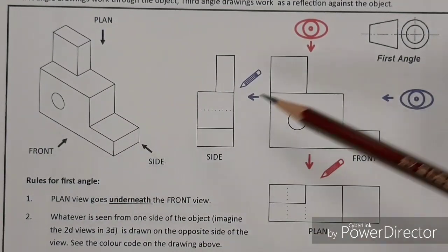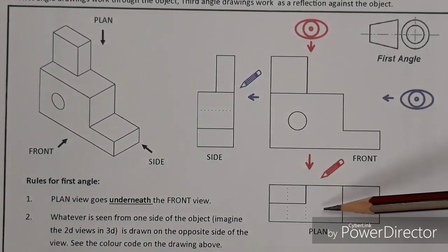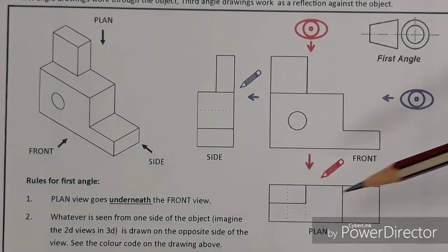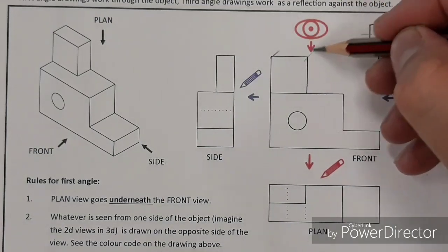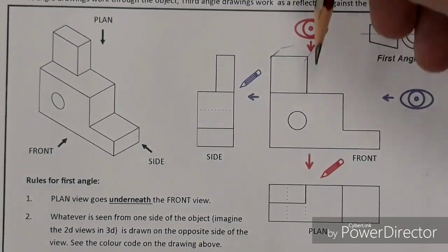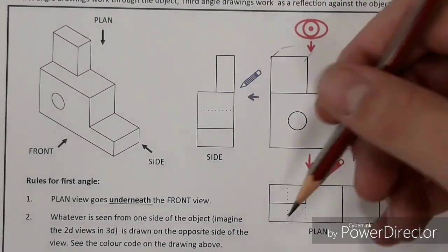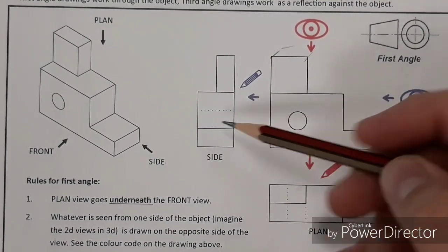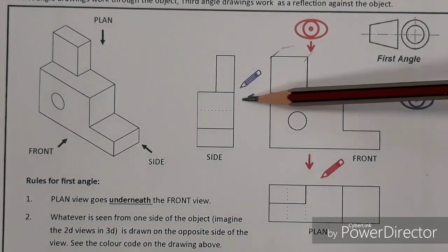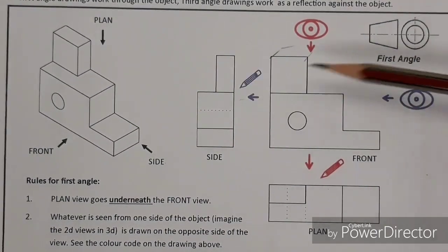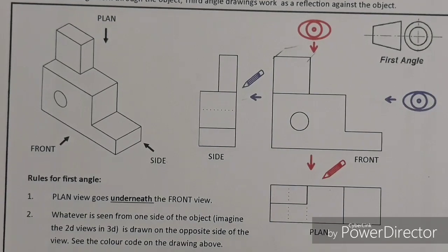For example, the front view is drawn at the top, and the plan view is drawn underneath. Whatever we see, looking at this 2D shape, if it was 3D, from above, we jump over the shape and we draw it underneath. The same with this view. This view represents what we see when looking at this front view, from this angle, we jump over the shape, and we draw it over here. That's what makes it different.